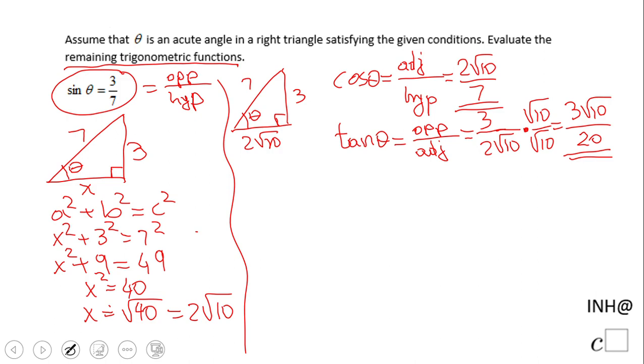Now we'll do the other three that most of the time you don't use but sometimes you do. The first one is cosecant, which is the reciprocal of sine. The definition is hypotenuse over opposite, and in this case that is 7 over 3.